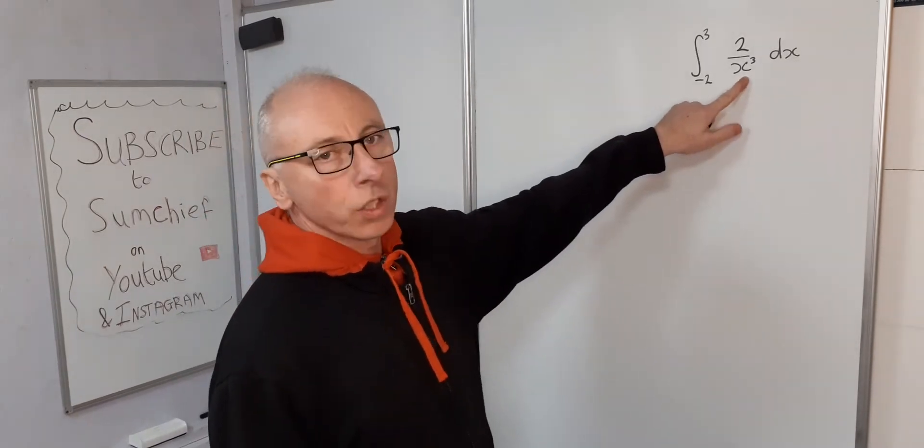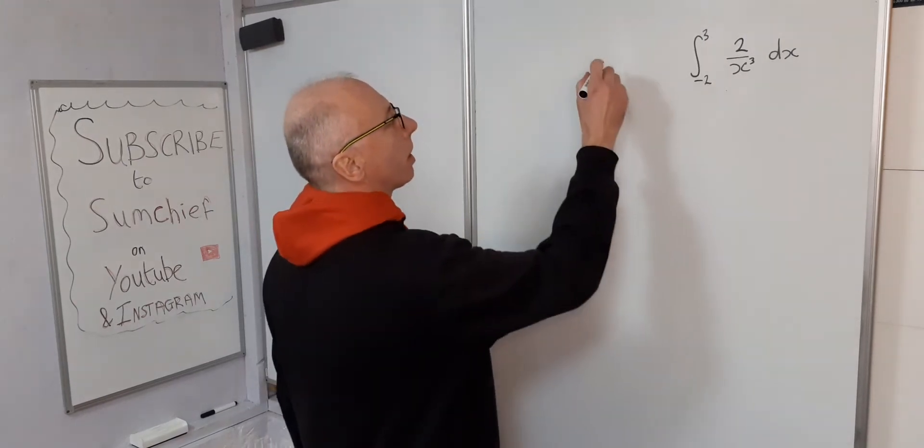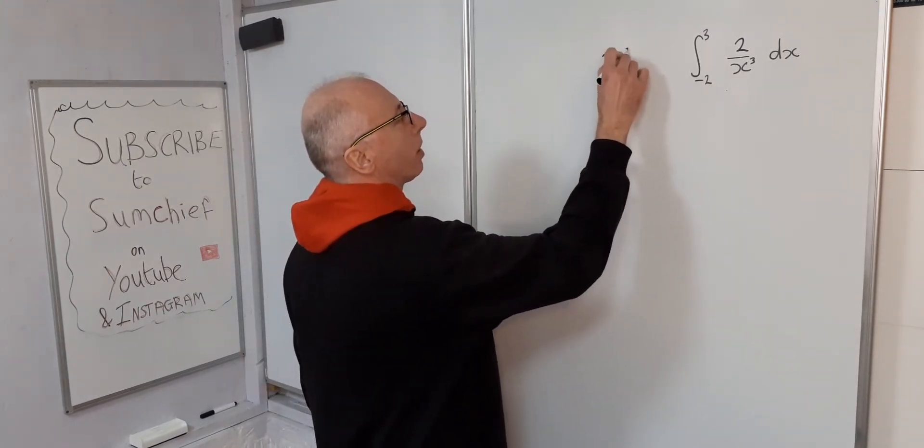Looking at this function here, we've got x cubed on the bottom. So we could say it's 2x to the minus 3.